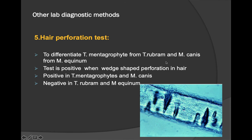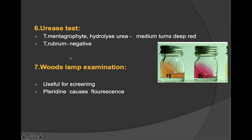The hair perforation test differentiates T. mentagrophytes and M. canis from T. rubrum and M. equinum. A wedge-shaped perforation in the hair indicates a positive result — positive for T. mentagrophytes and M. canis, negative for T. rubrum and M. equinum.